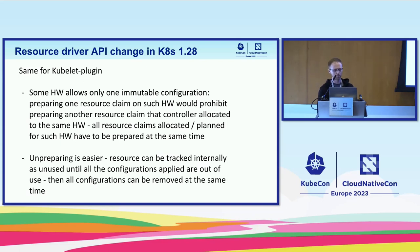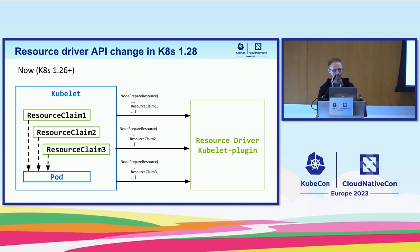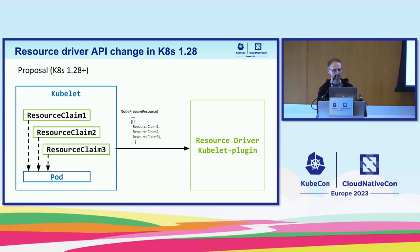This problem also applies to the kubelet plugin, especially for hardware that can only handle one configuration entry at a time — for example, virtual functions on SRIOV-capable hardware. Once several VFs are provisioned, subsequent VFs can only be provisioned when previously created ones are dismantled. If a pod requests two standalone virtual functions, the first might be created but the second cannot due to hardware limitations. Passing all resource claims simultaneously to node prepare resource makes bookkeeping and resource handling much easier.